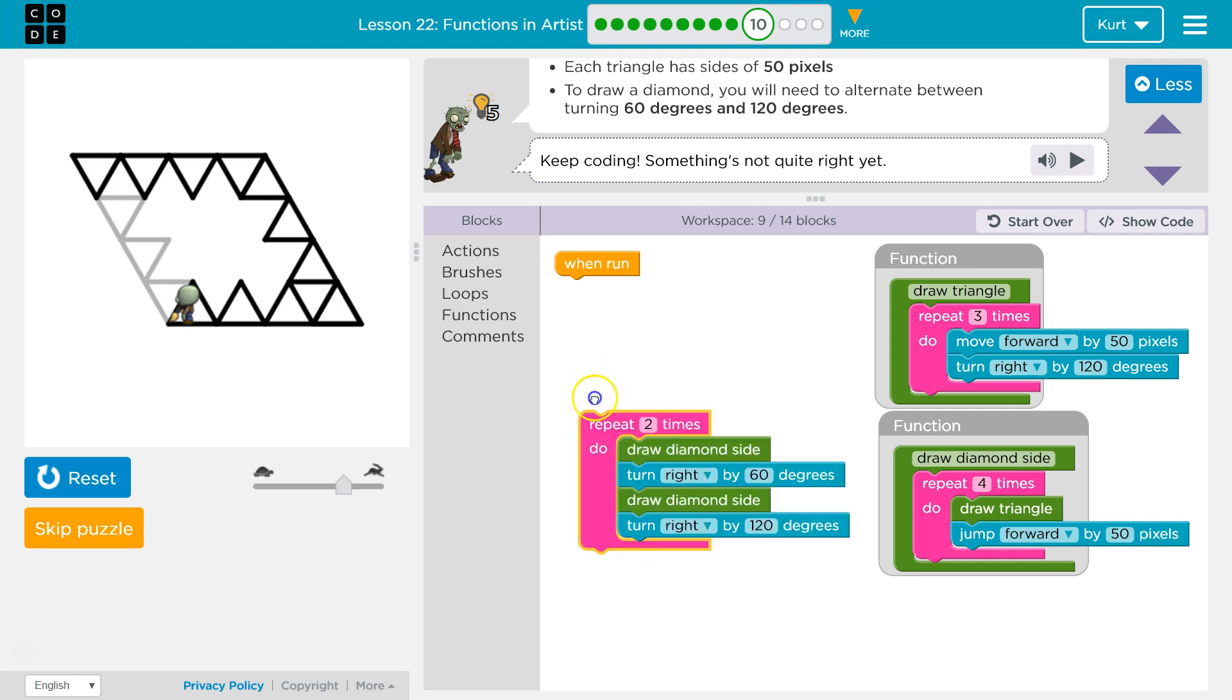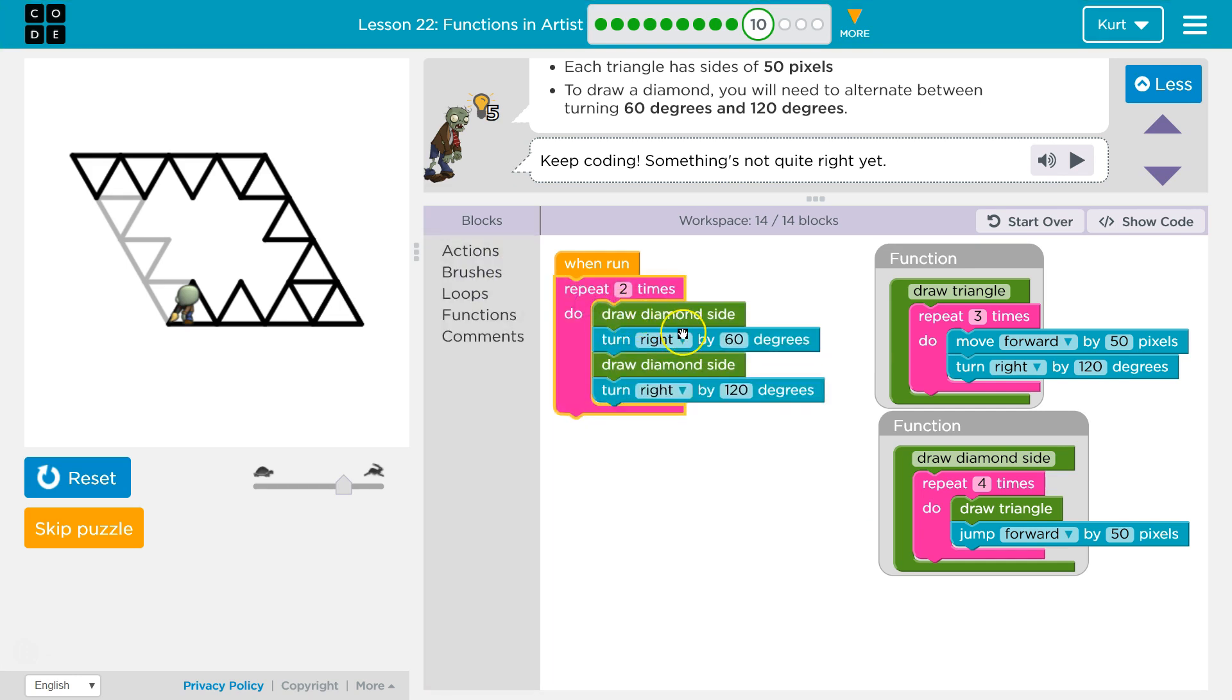And how many sides? We're going to draw four sides, right? So, draw a side. Turn right. Draw a side. Turn right by 120. Facing this way. And then do all that again on this side.